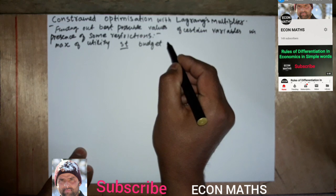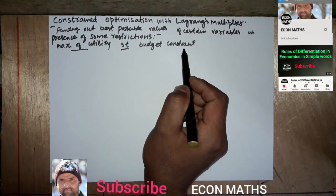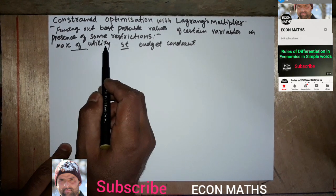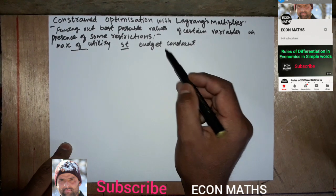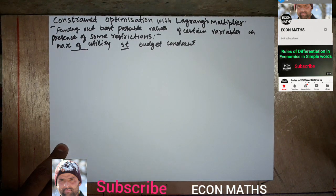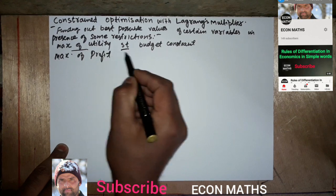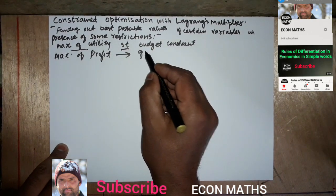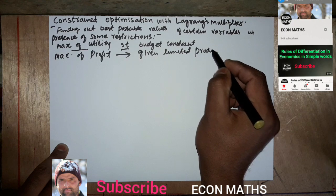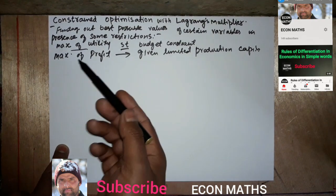Here, one function can be the utility function and another can be the budget function. We have to maximize the utility, but there is a constraint — the income or budget. Similarly, it can be maximization of profit by a firm, where the constraint is the firm's given limited production capacity.